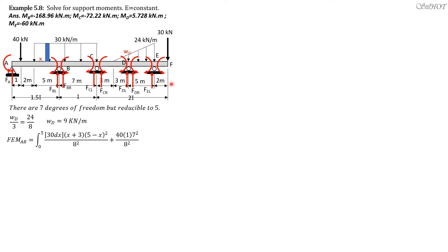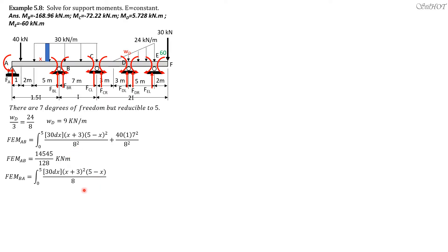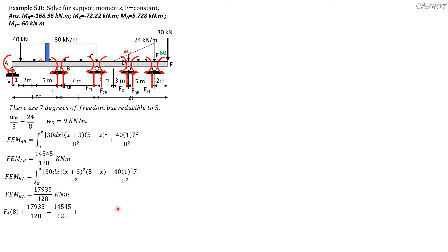At EF we have a 60 kilonewton meter counterclockwise load. Fixed end moment AB equals 14545 over 128 kilonewton meter. Fixed end moment BA is the integral of 30 dx times (x plus 3) squared times (5 minus x) over 8 squared, plus 40 times 1 squared times 7 over 8 squared, which equals 17935 over 128 kilonewton meter.